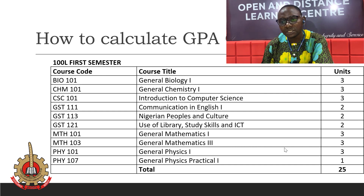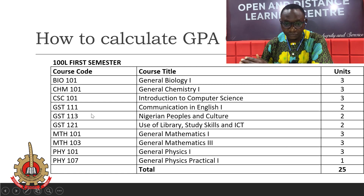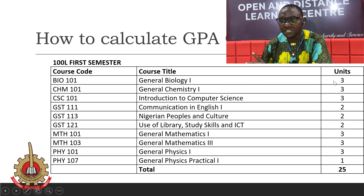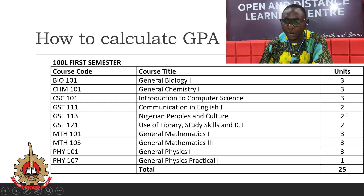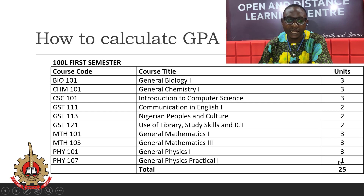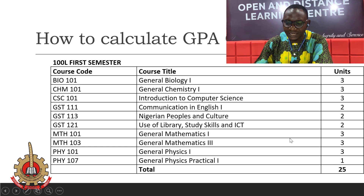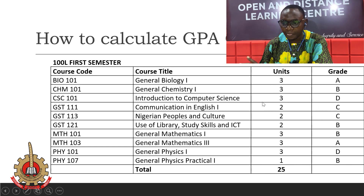Now let's see how to calculate GPA, which is applicable to a particular semester. After you have registered for courses — let's say 100 level first semester — you should pay attention to the number of units each course carries. For example, BIO 101 is a 3-unit course, GST 111 is a 2-unit course, and PHY 107 is a 1-unit course. At the end of 100 level first semester we have a total of 25 units. After you have written your exams, your scores come out in grade form.